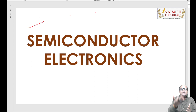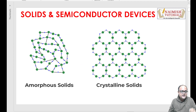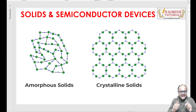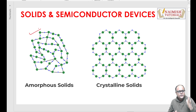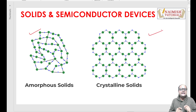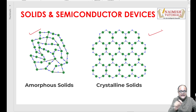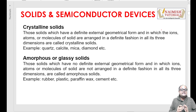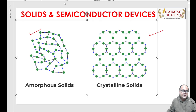Pehle hum solids ko jaanein, phir hum conductivity ke basis par conductors, insulators aur semiconductors ko padhenge. Bacchon, solid aur semiconductor devices ke liye, humein yeh samajhna padega ki do tarike ke solids hote hain. Aapko screen par do diagrams dikh rahe hain. Pehle diagram mein, solid mein jo atoms, molecules, constituent particles hain, yeh kisi fixed pattern pe nahi lage hain - yeh haphazard manner mein lage hain.